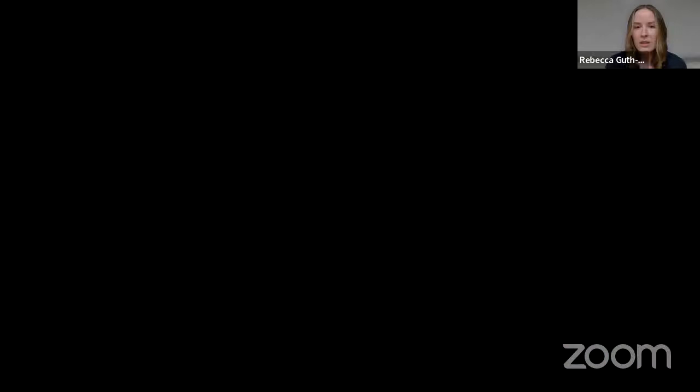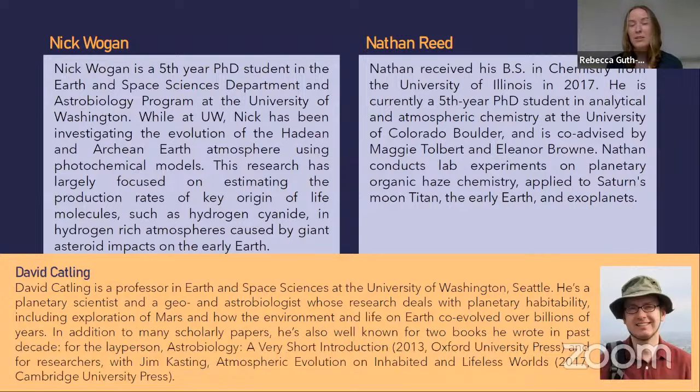Thank you so much, Nick. Now Nathan Reed will speak and we'll take questions for everyone at the end. Nathan received his BS in chemistry from the University of Illinois in 2017. He is currently a fifth-year PhD student in analytical and atmospheric chemistry at the University of Colorado Boulder, co-advised by Maggie Tolbert and Eleanor Brown. Nathan conducts lab experiments on planetary organic haze chemistry applied to Saturn's moon Titan, early Earth, and exoplanets.